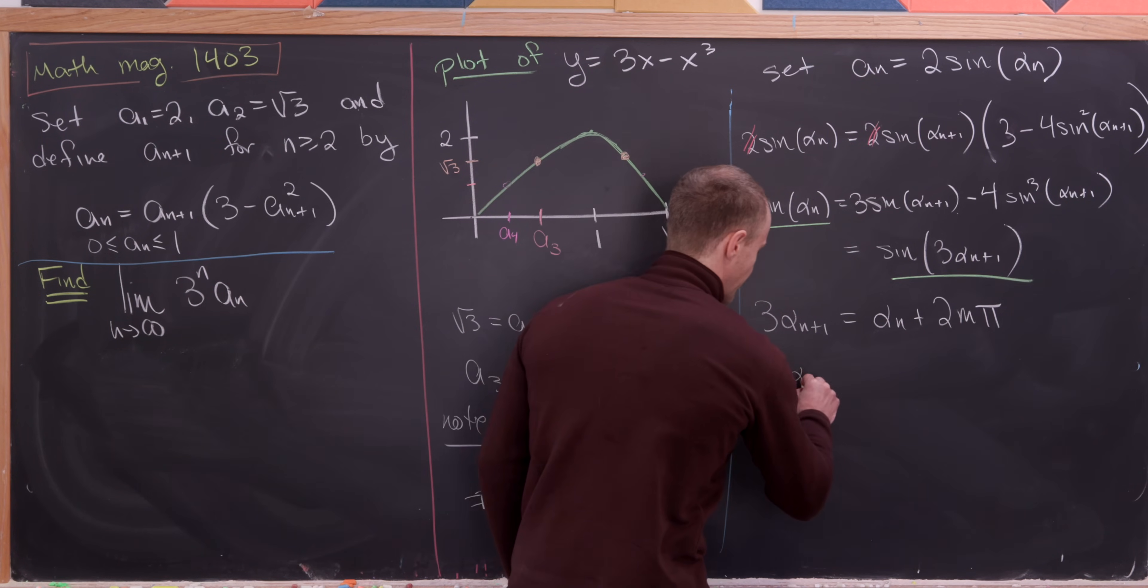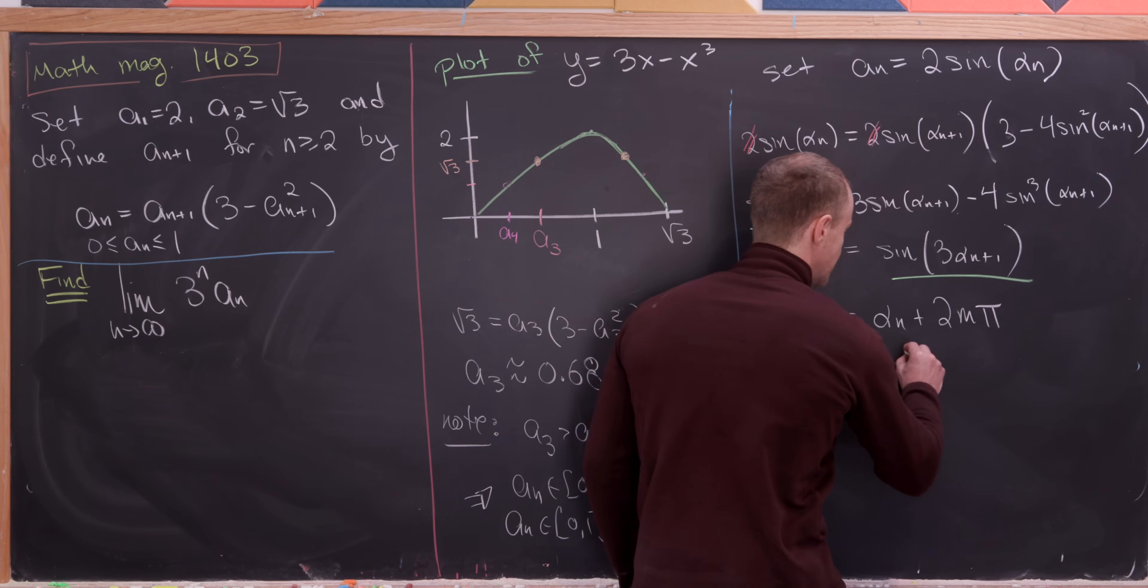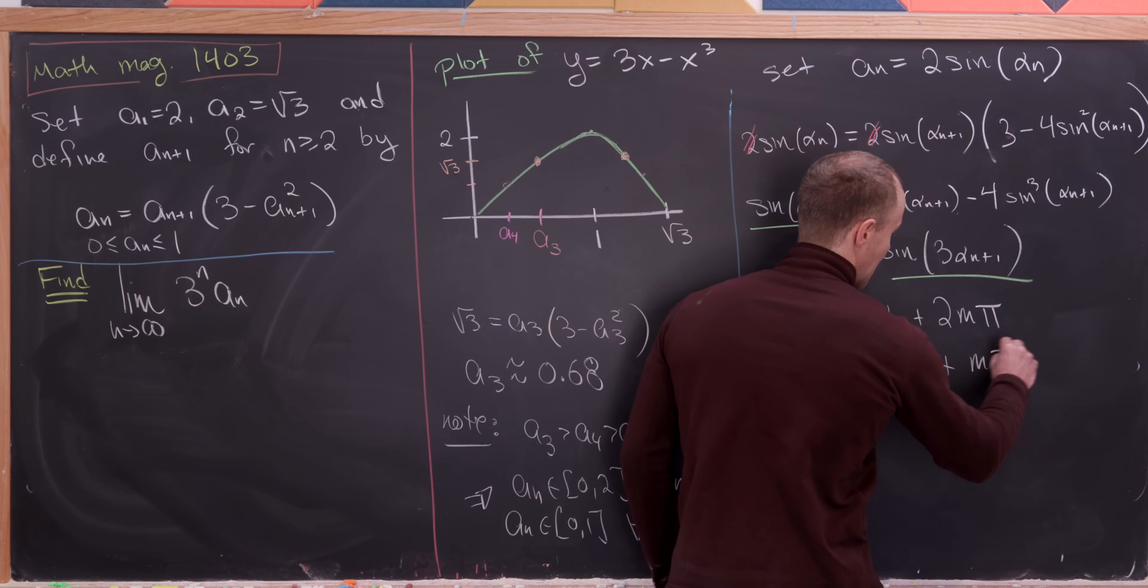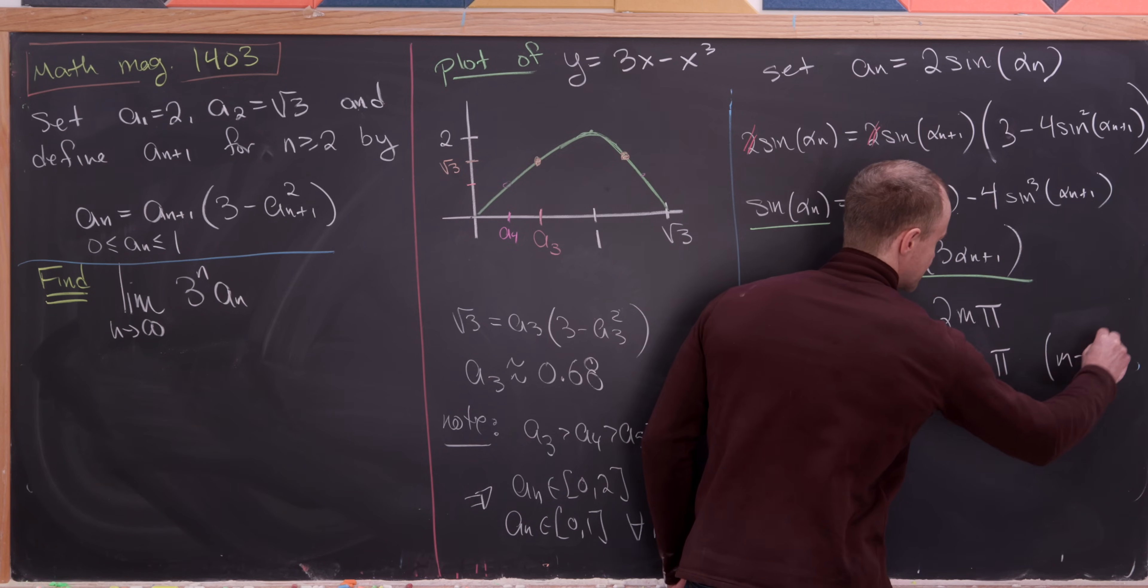Or we have 3 alpha n plus 1 is equal to negative alpha n plus m times pi, where m is odd.